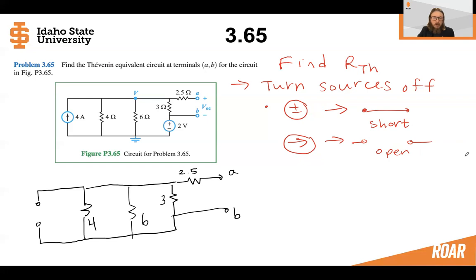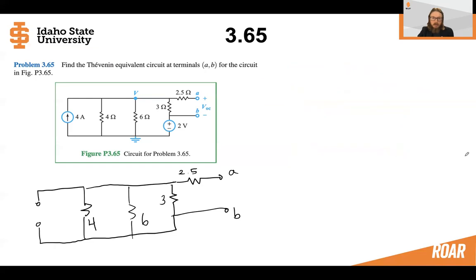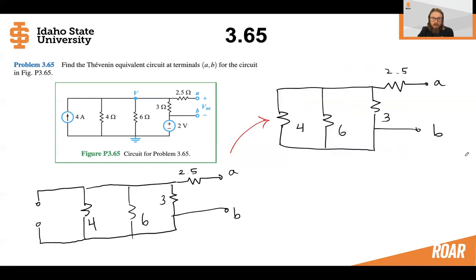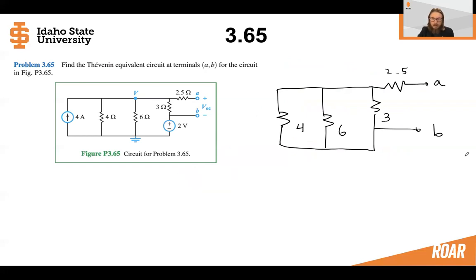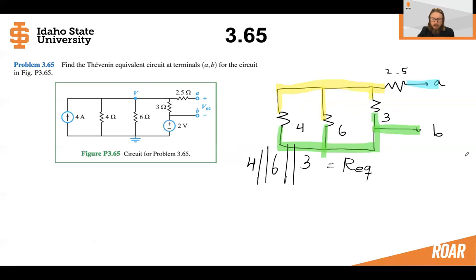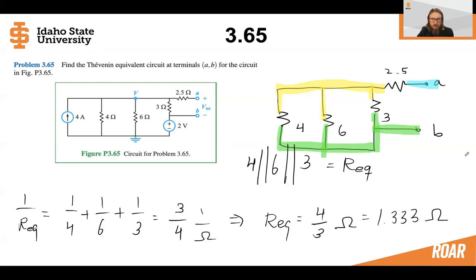When we do that, we have a more simplified circuit we can use to find the Thevenin resistance. We can simplify this a little bit more and remove part of the drawing. Now let's color code the nodes so we can see that the 4, 6, and 3 ohm resistors are all in parallel. Finding the equivalent resistance for those three using the parallel resistance method gives us an equivalent resistance of 1.333 ohms.